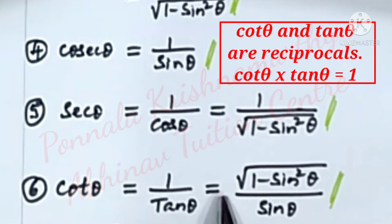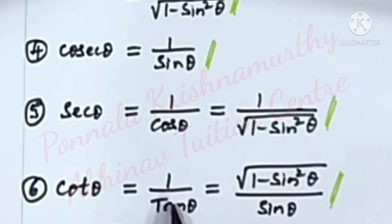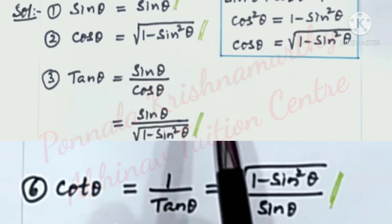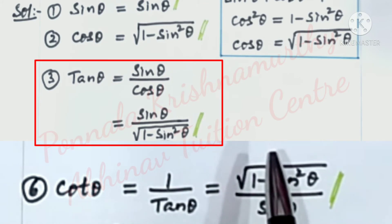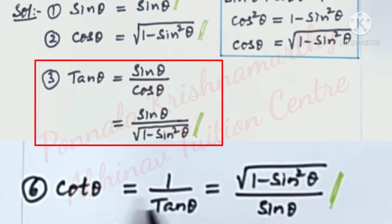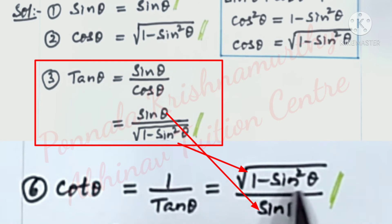Tan theta is equal to sin theta by under root 1 minus sin square theta. So cot theta becomes under root 1 minus sin square theta by sin theta.